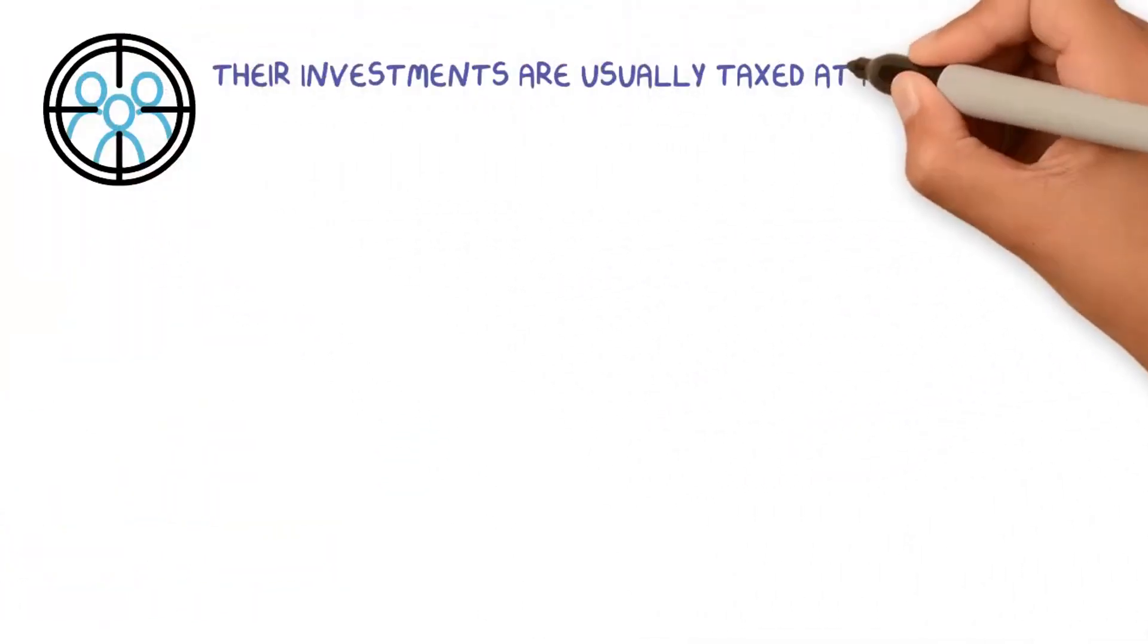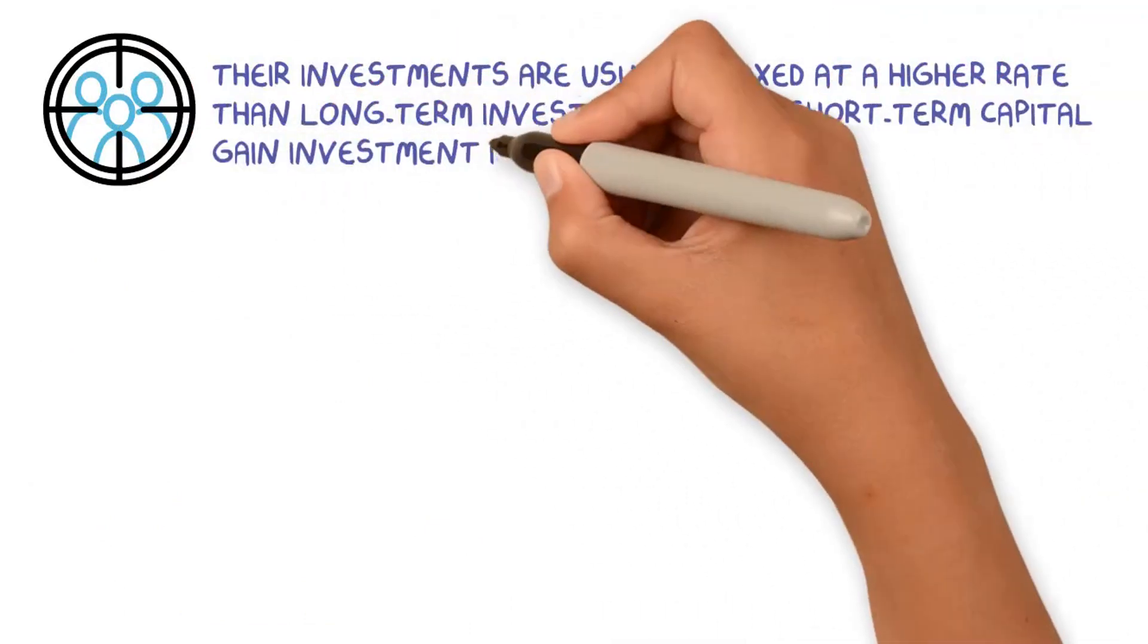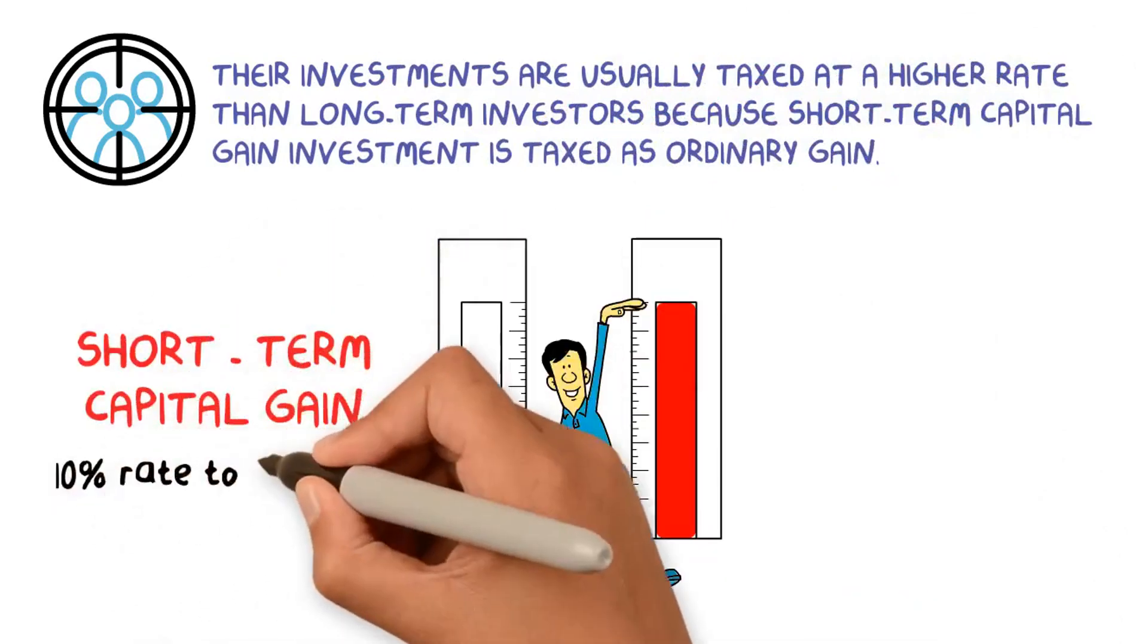One observation about this type of investor is that their investments are usually taxed at a higher rate than long-term investors because short-term capital gain investment is taxed as ordinary gain. Short-term capital gains can be taxed from 10% rate to 37% rate, while long-term capital gains can be taxed from 0% rate to 20% rate.